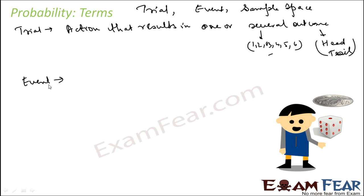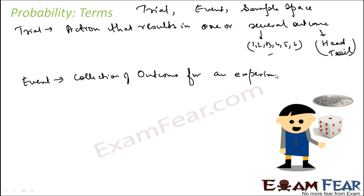The next term is event. Event is nothing but the collection of outcomes. For example, getting a head is an event, getting a tail is an event, getting a one is an event, getting a two is an event in the throw of a die. For example, if we are throwing a die hoping to collect only odd numbers, then getting one is an event, getting three is an event, getting five is an event. So getting one, three, and five is the event for the outcome 'odd number.' An event is the collection of outcomes for an experiment.